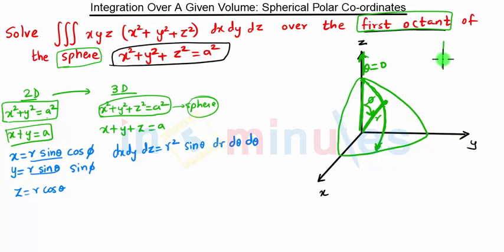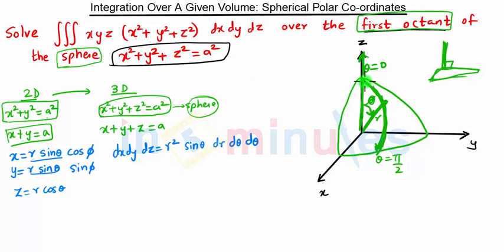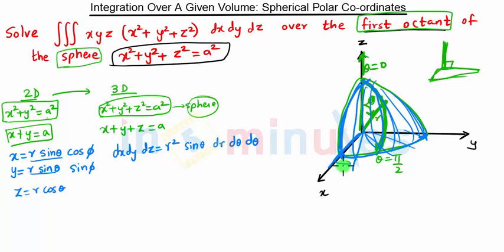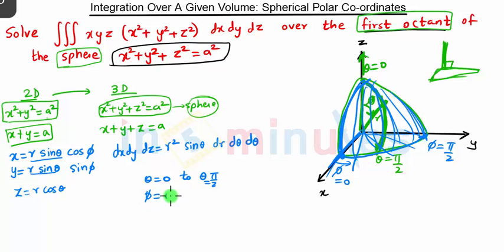The z-axis makes an angle of 90° with the xy-plane. The angle θ is measured from the z-axis, and for the first octant θ goes from 0 to π/2. Then we rotate the strip from one side to the other, so φ also goes from 0 to π/2. These are the basic limits for the first octant: θ from 0 to π/2, and φ from 0 to π/2.